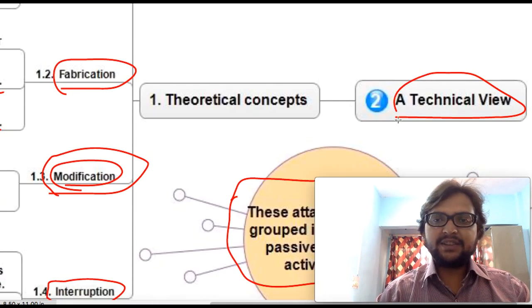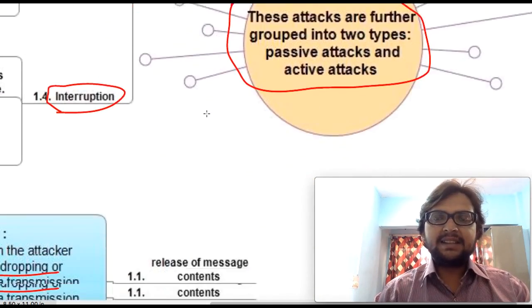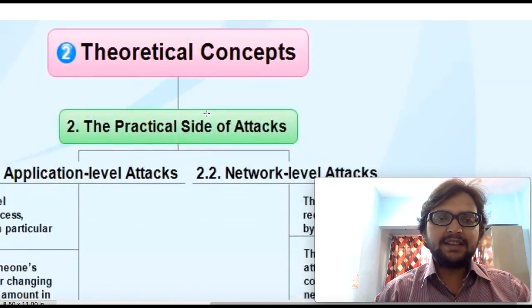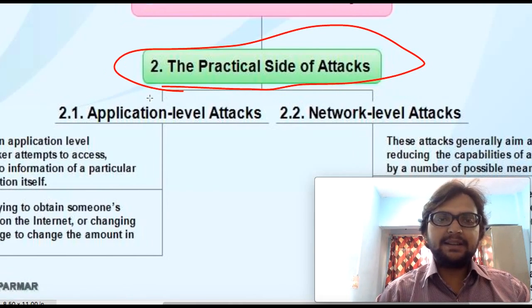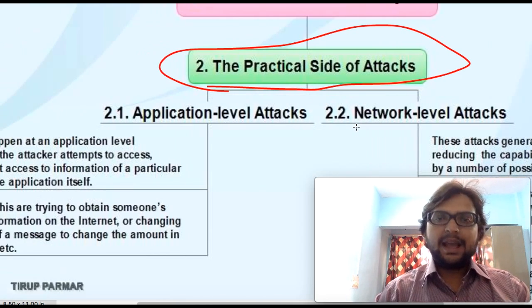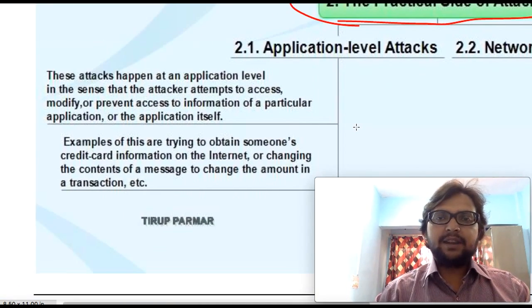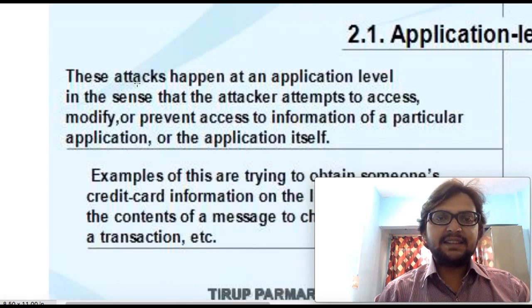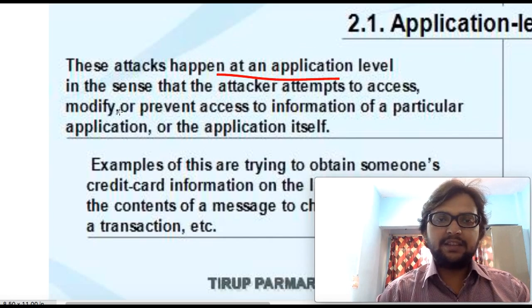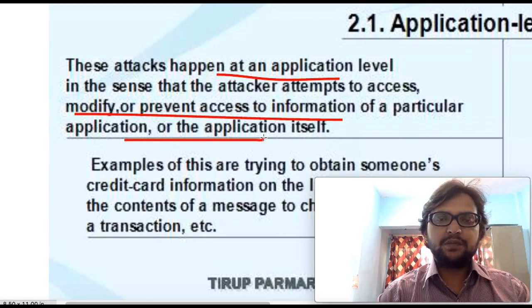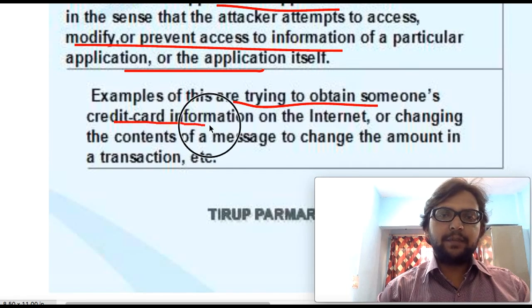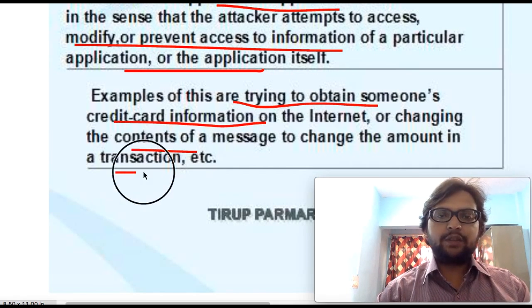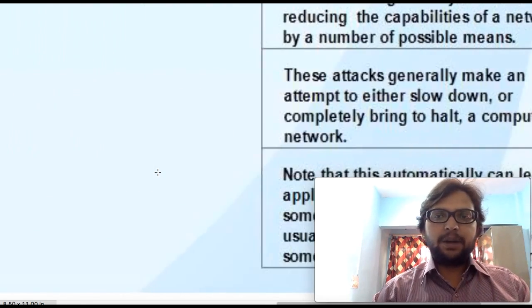Now let's discuss the practical part, which is subdivided into application-level and network-level attacks. Application-level attack means the attacker attempts to access, modify, or prevent access to information of a particular application — such as WhatsApp or Facebook. Examples include obtaining someone's credit card information online or changing the content of a message or amount of a transaction.